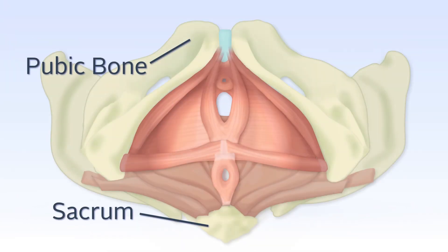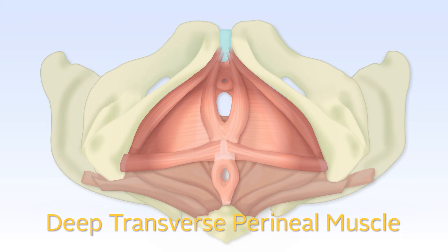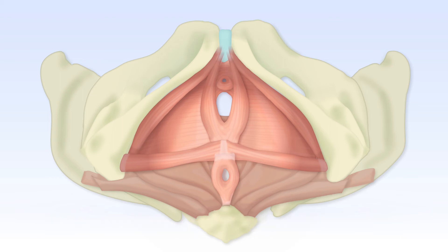In this picture, the pubic bone is at the top and the sacrum at the bottom. Looking at the urogenital diaphragm, you can see that the urethra, vagina, and anal canal are passing through the pelvic floor muscles. The middle layer consists of the external urethral sphincter contributing to urethral closure, and the deep transverse perineal muscle stabilizing the perineum. A major part of this layer contains connective tissue.